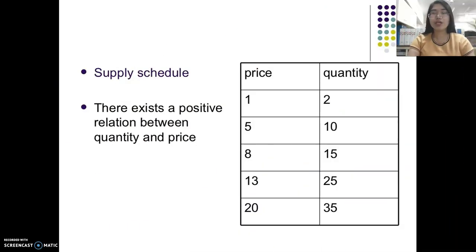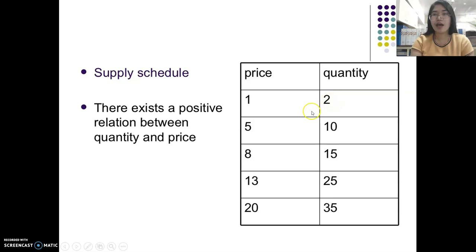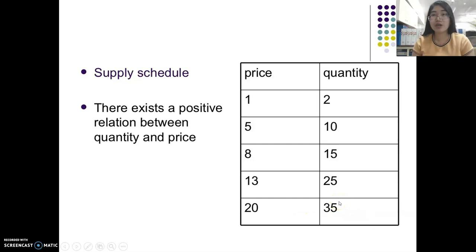When analyzing supply, we use three types: the supply schedule, the supply curve, and the supply function. The supply schedule is a table representing the relationship between price and quantity supplied. For instance, if the price is low, the tendency is to supply less; if the price is higher, suppliers will supply more — for example, at price 20, they will supply 35 units.